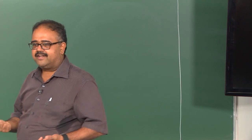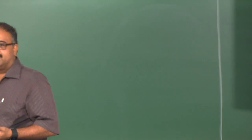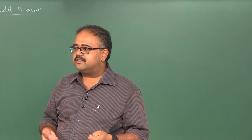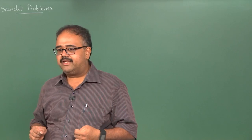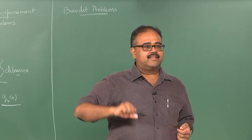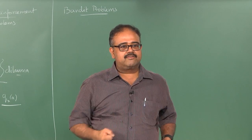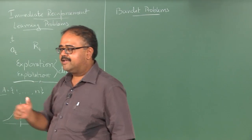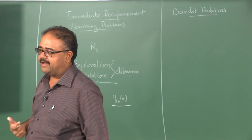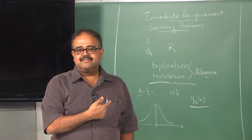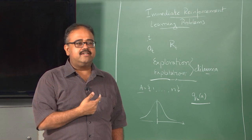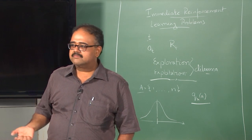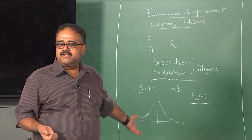No casino is going to put up a machine that actually makes money for the customer. So in the long run the slot machine will steal your money. That lever you pull is called the arm, and since it has one lever it is called the one-arm bandit. Here, instead of having one arm it has N arms.